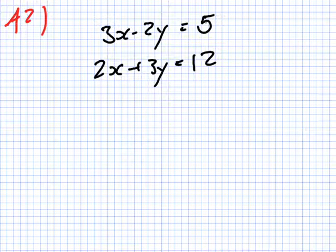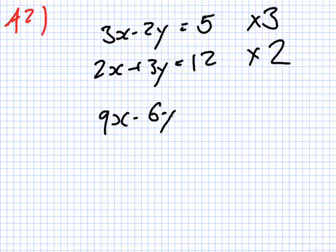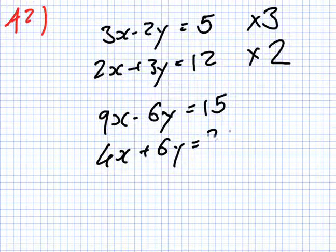I'll multiply this by 3 and this by 2. So I get 9x minus 6y equals 15, and 4x plus 6y equals 24.